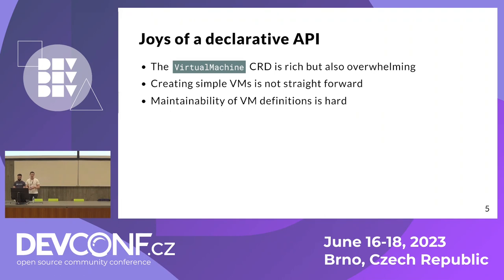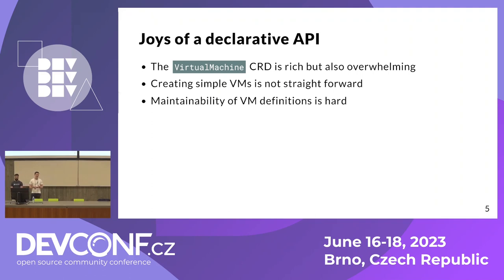What are the joys of declarative API? As I just told you, KubeVirt provides the vast set of capabilities of QEMU and libvirt, and it does that with a declarative API, as all Kubernetes objects do. For that, we have the virtual machine custom resource definition. This is very rich, but it can also be very overwhelming, especially for users intending to create virtual machines in the simplest possible way. Also, maintainability of virtual machines can become quite hard — if you have a fleet of virtual machines and you want them all to use the same settings, you would have to keep track of all the settings separately for each VM. This is not very maintenance friendly.